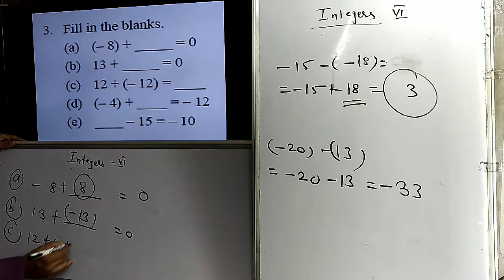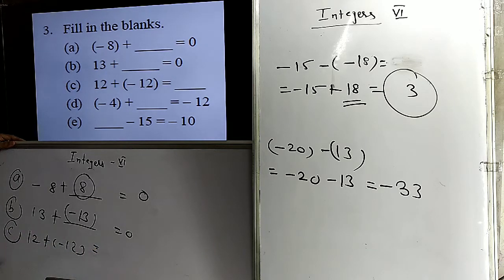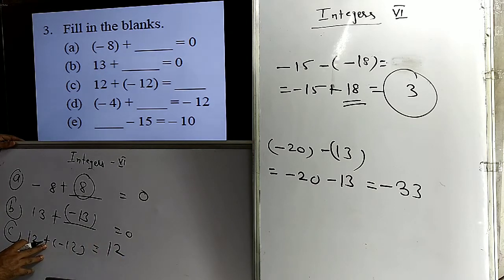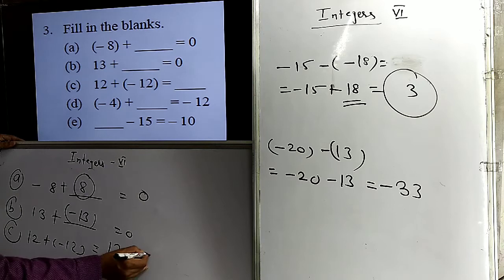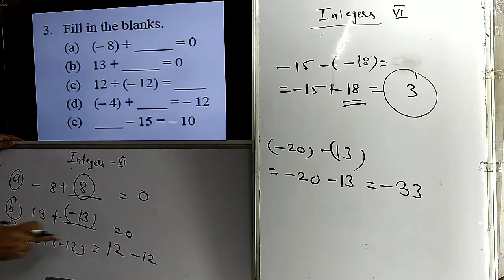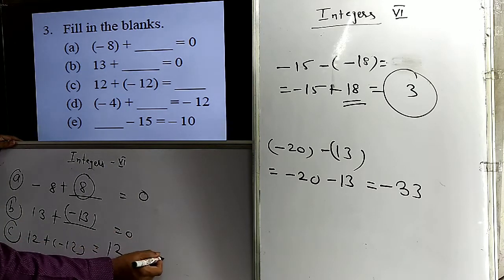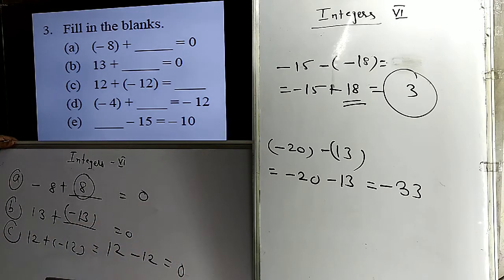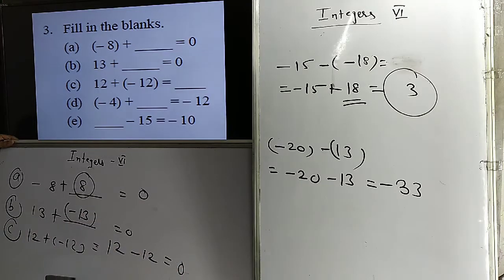The next problem is 12 plus minus 12 equals what. If we open the bracket, the plus sign outside means no change in the sign inside the bracket, so it remains minus 12. Then 12 and minus 12 are additive inverses of each other, and their sum is 0.